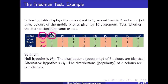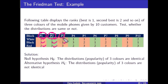Customer P2 gave first rank to black, second rank to white, and third rank to red. Customer P3 gave first rank to white, second rank to black, and third rank to red. Similarly, customer P8 gave first rank to red, second rank to black, and third rank to white.